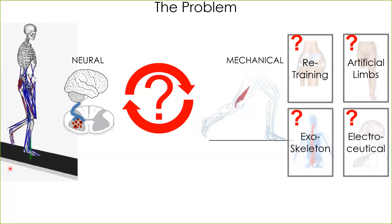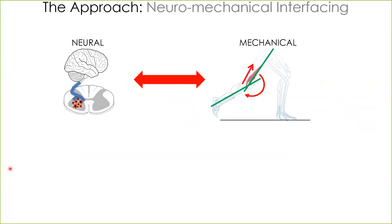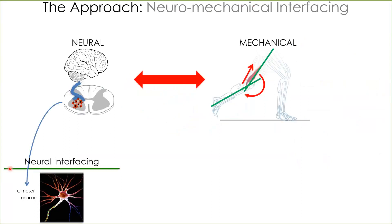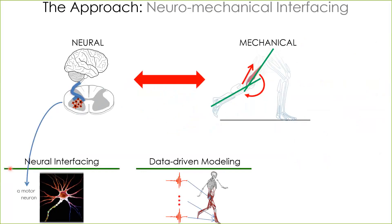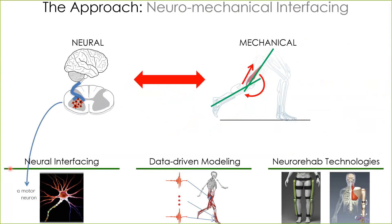First, we need to establish a clinically viable interface with the central nervous system — an interface we can use to record the activity of neural cells involved in the generation of motion. Alpha motor neurons in the spinal cord are good candidates. Then we need to build mechanistic models of the human body to estimate how it operates as controlled by the nervous system. If we can do these two steps in real time, we have the basis for interfacing humans with wearable robots. I'll focus on bionic limbs for upper extremities and robotic exoskeletons for lower extremities.